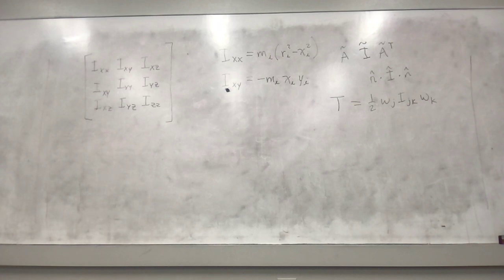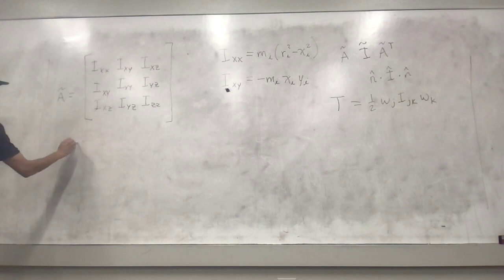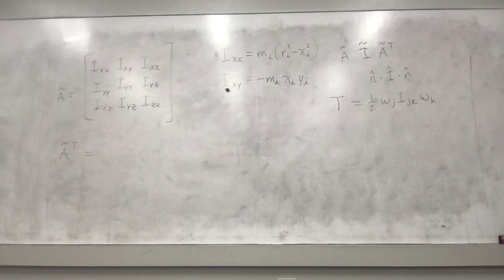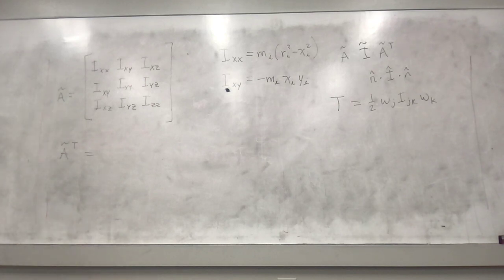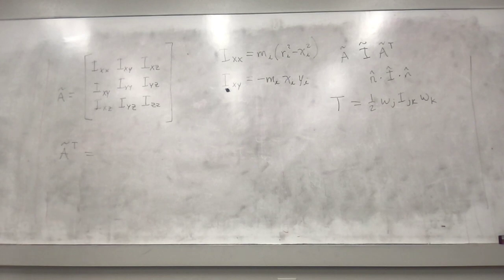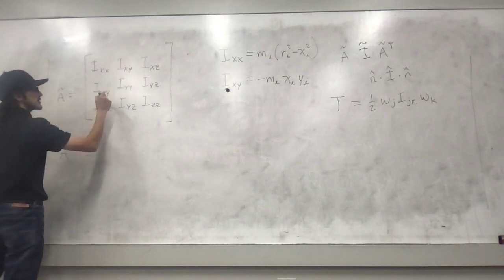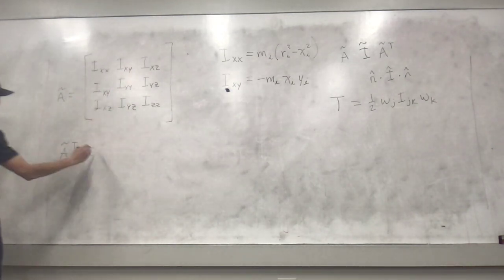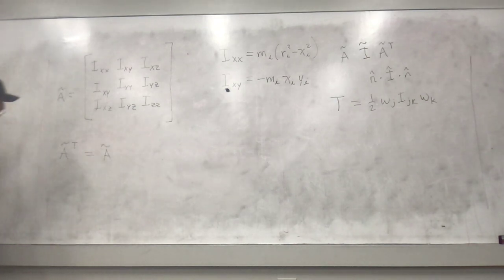If we take the transpose — let's call this matrix A — how is the transpose of A going to look like? How do you transpose it in your head? Rotate. So this element goes to this position, this one to this position, this one to this position — they have the same value. So the transpose of A is also A.